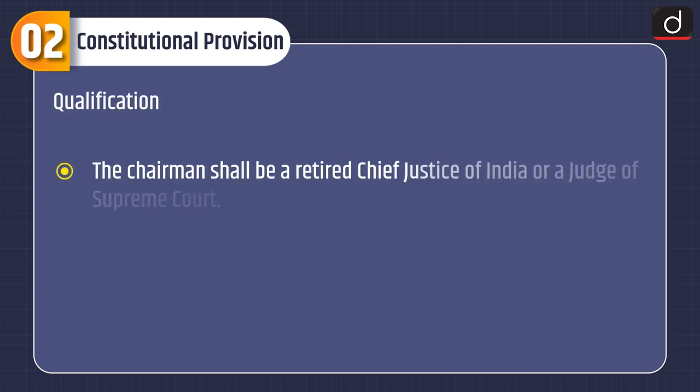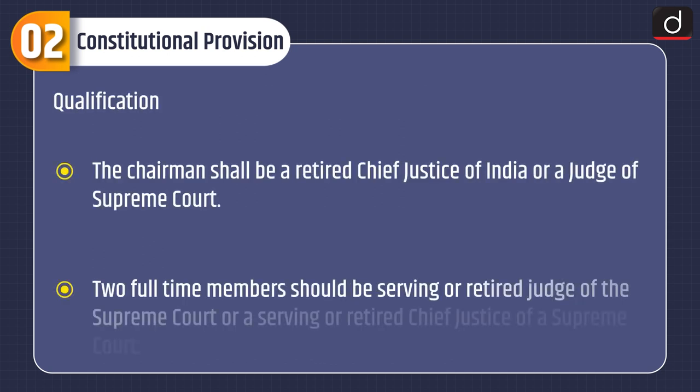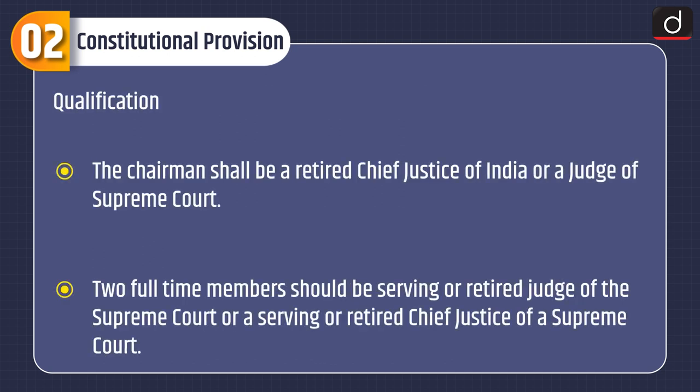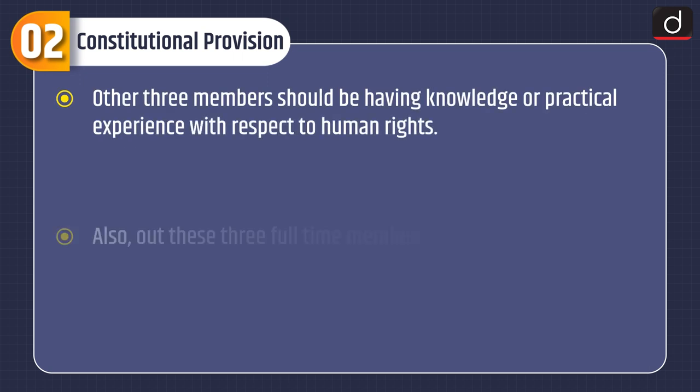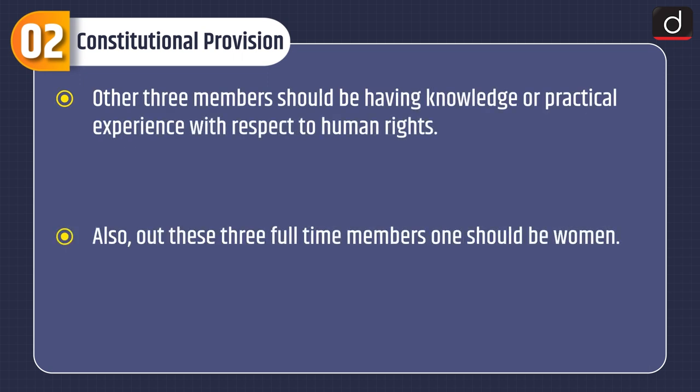Next is qualification. The chairman shall be a retired Chief Justice of India or a judge of the Supreme Court. Two full-time members should be serving or retired judges of the Supreme Court or a serving or retired Chief Justice of a High Court. The other three members should have knowledge or practical experience with respect to human rights, and out of these three full-time members, one should be a woman.